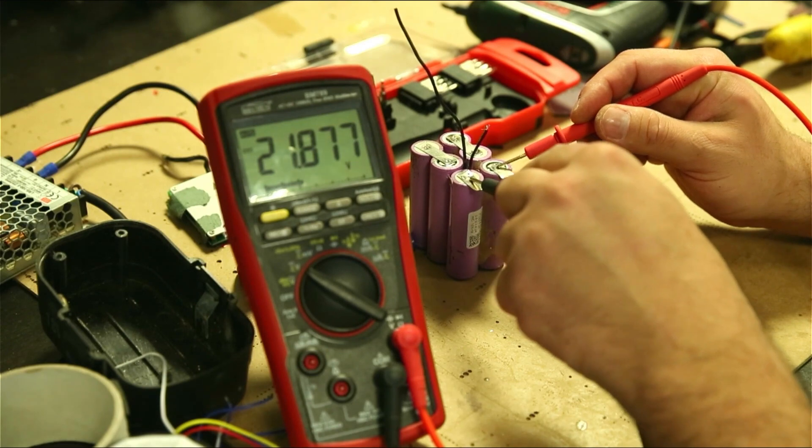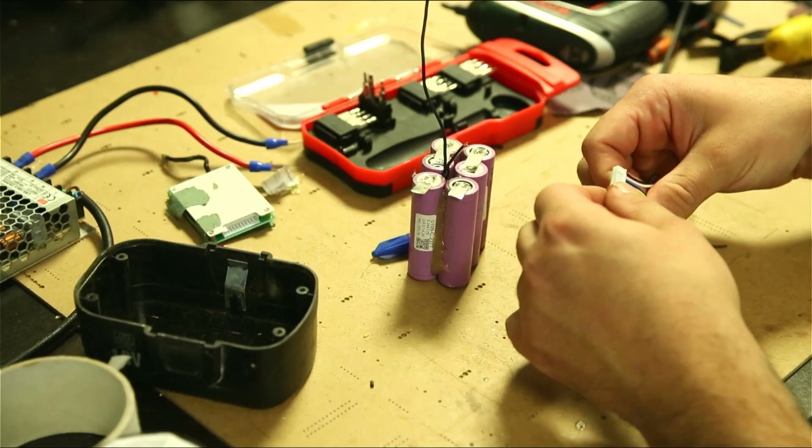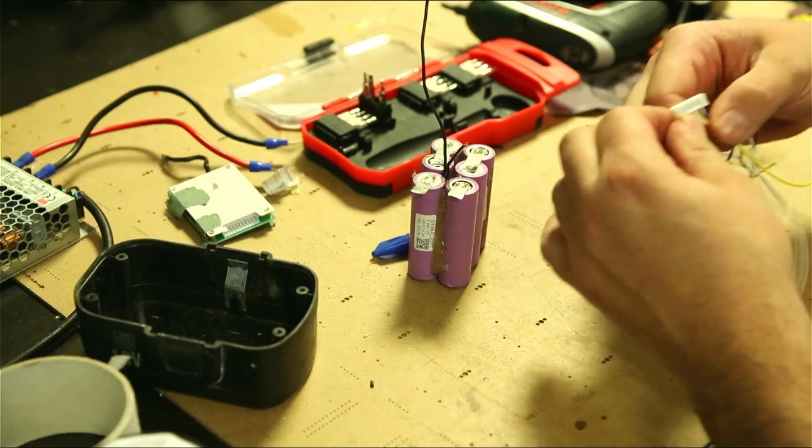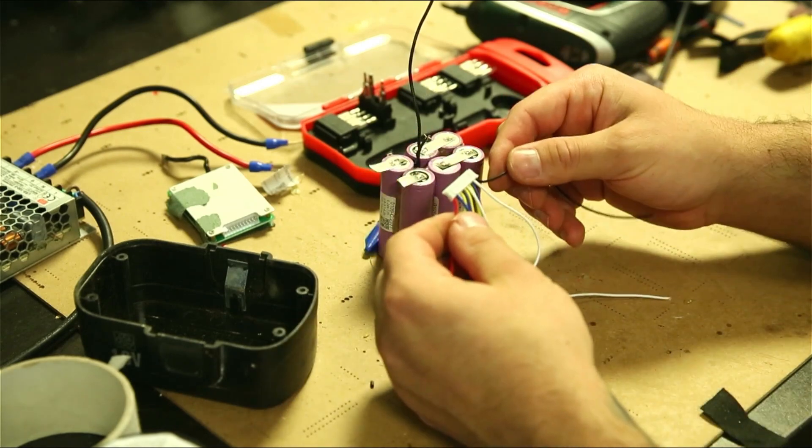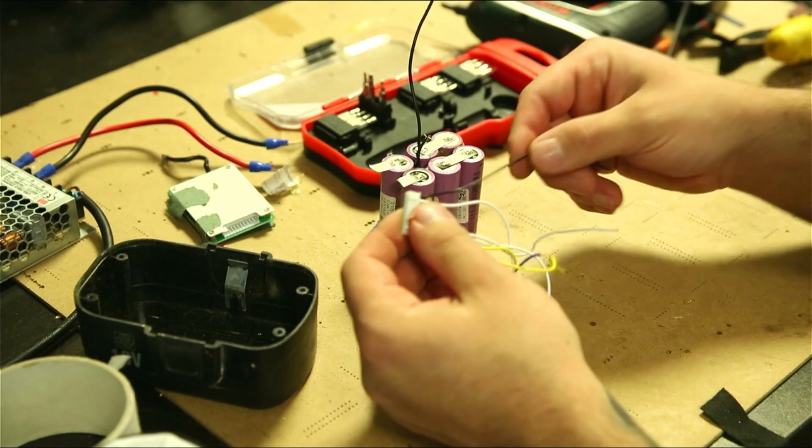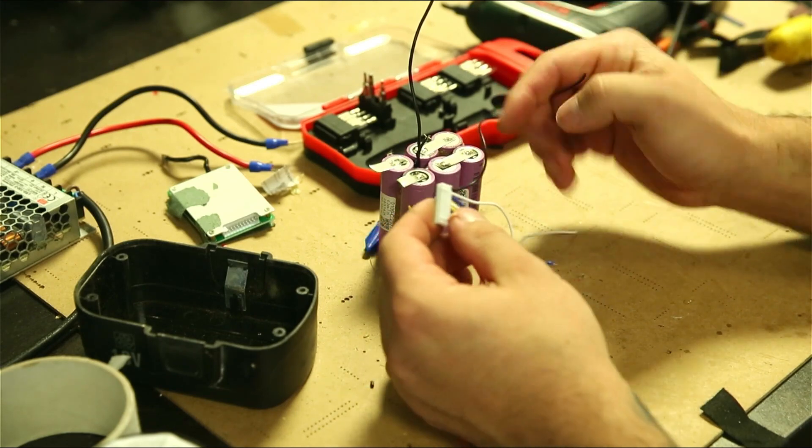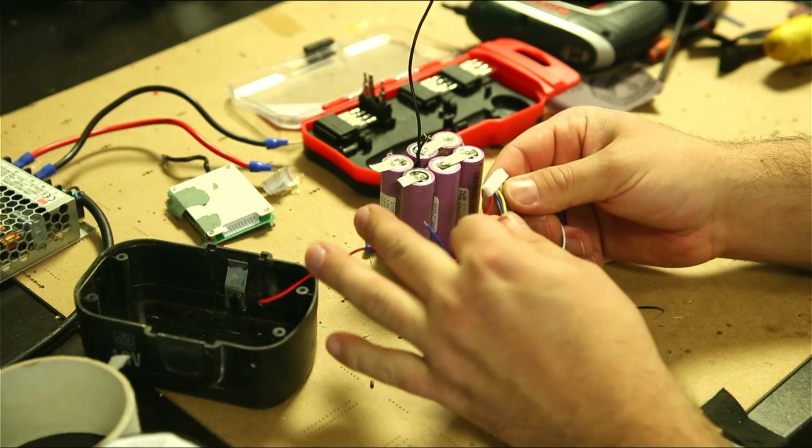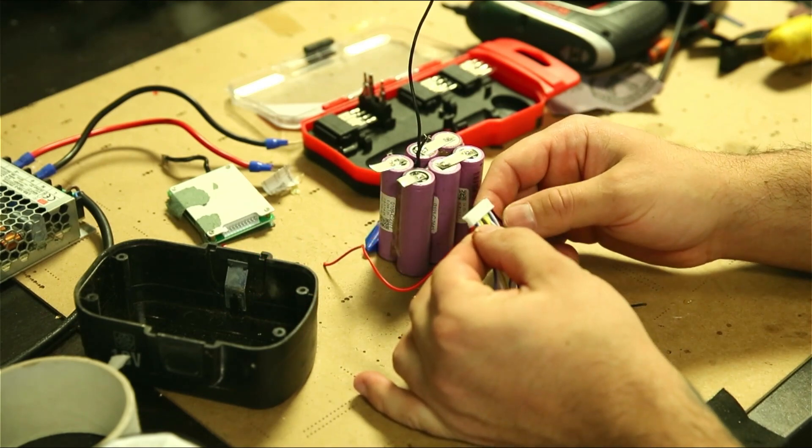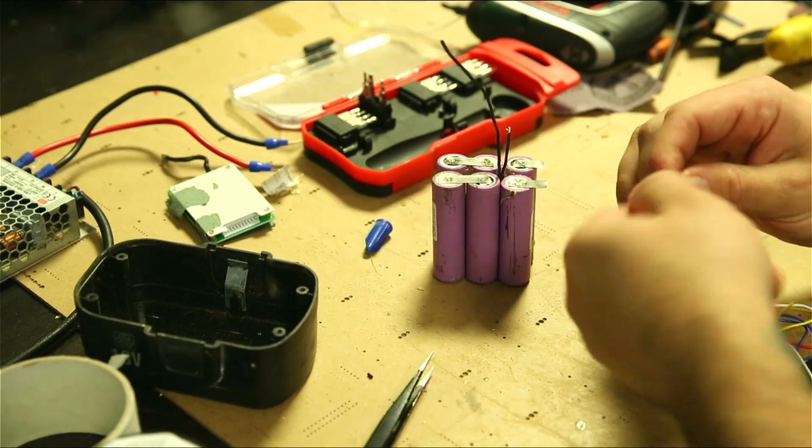We have almost 22 volts. This is the connector that I'm going to use for the BMS. You see it has a red wire and a black wire at the ends. We will start with connecting the black wire and then continue with the rest of the cells. We will be using seven wires, starting with the negative side of the battery.